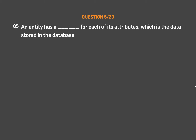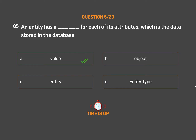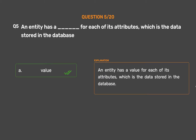Question number 5. An entity has a ___ for each of its attributes, which is the data stored in the database. Option A: Value. Option B: Object. Option C: Entity. Option D: Entity type. The correct answer is Option A: Value. An entity has a value for each of its attributes, which is the data stored in the database.